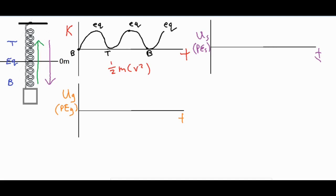With our second graph we are going to be taking a look at the gravitational potential energy, and that is mgh where g is the constant 9.8. Again the mass of the block is going to be constant so it's just the height that's the main factor in affecting how the gravitational potential energy changes. When you're taking a look at the gravitational potential energy you pick your baseline height, so we'll say that at the equilibrium position it's zero, below zero is the negative direction, and above zero is the positive direction.